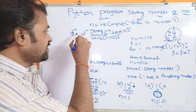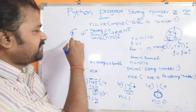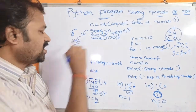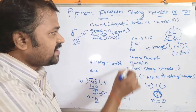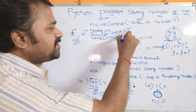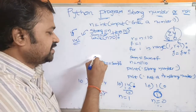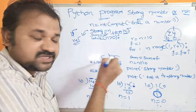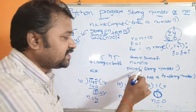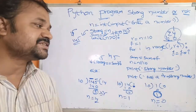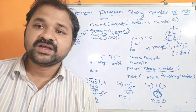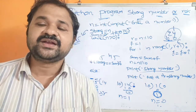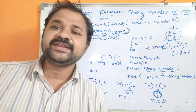After the loop, strong contains 145 and sum contains 145. Both are equal, so we can say that the number is a strong number. Let us now verify whether this logic is correct by running it on the computer.